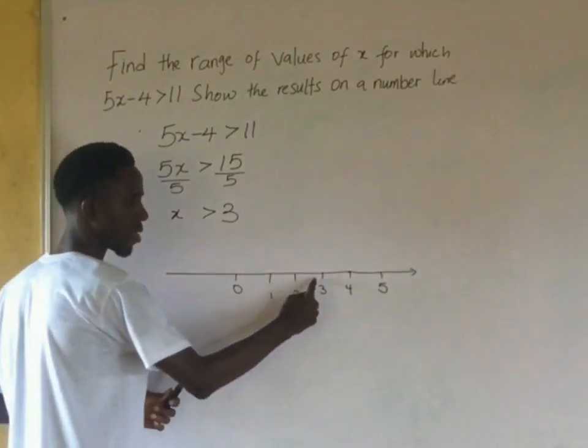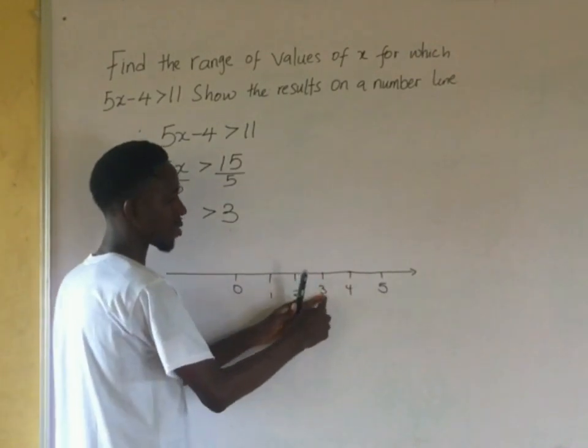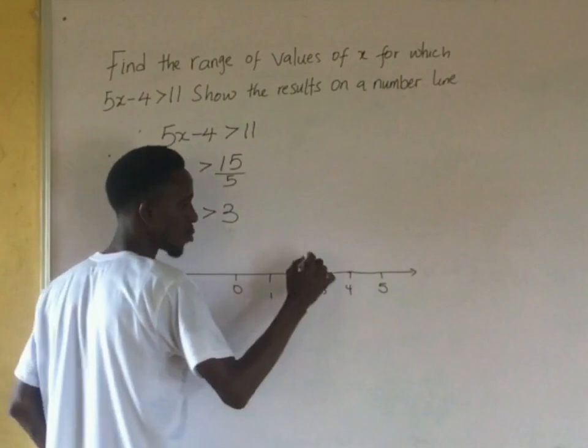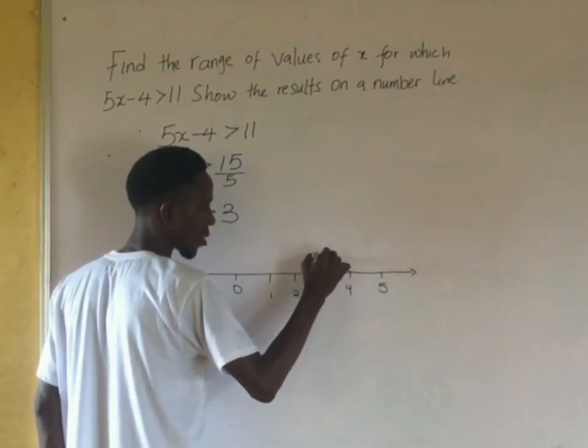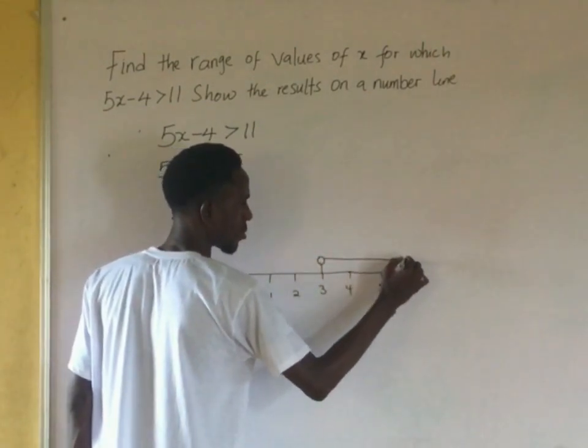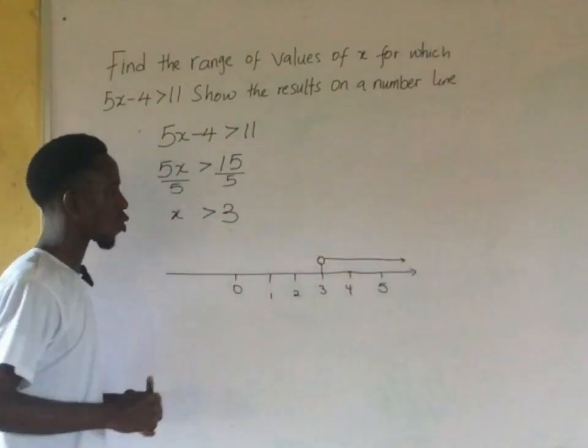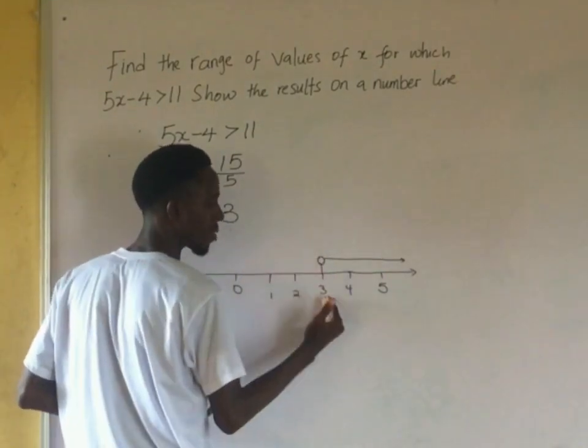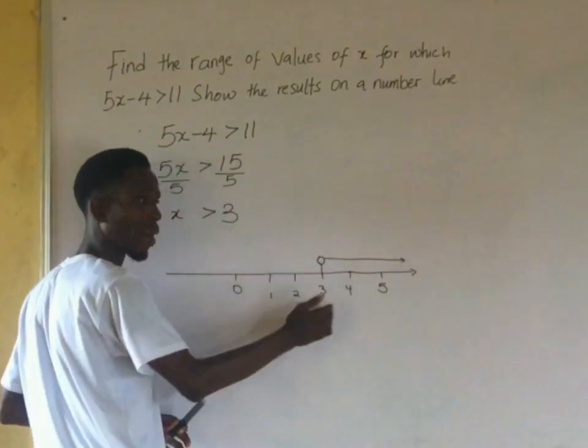So this is 3, so the numbers greater than 3 are 4, 5, and it continues. I'm going to start from here and put it like this, showing that it is continuing to that point, so every value apart from 3.